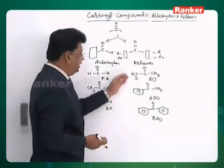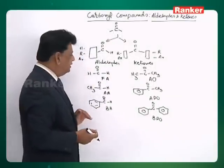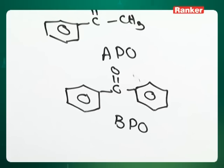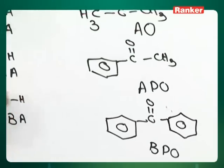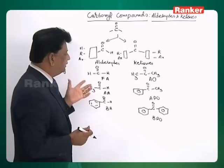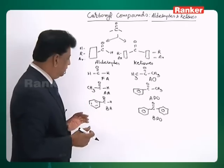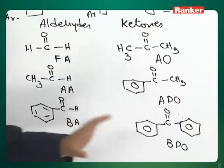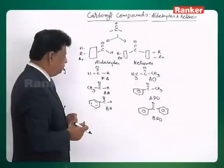So, three ketones and three aldehydes are very standard and common examples. Taking these six compounds, you can have a total study representative of aldehydes and ketones, and the entire study can be completed using them.